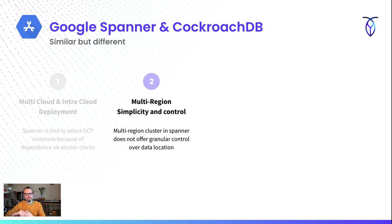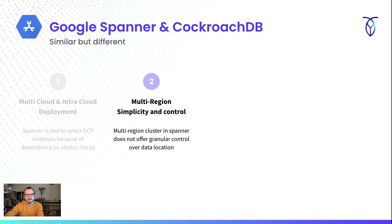If we start thinking about multi-region — this concept of how do I put data in different locations to either survive the failure of an entire region, or place data close to users for low-latency access — having this granular control over data location in Cockroach is really, really powerful. At the row level of each table, we define this. Having those simple controls is another area in which CockroachDB does go a little bit different than what the implementation details are in Spanner.